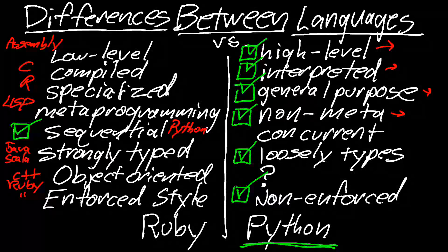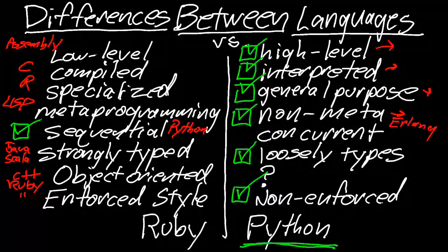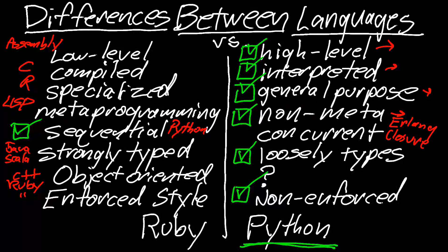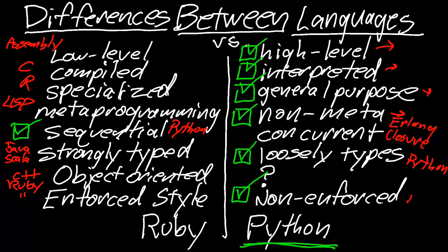General purpose again is almost everything. Non-meta is almost everything. Concurrent, well, that's an interesting one. There's a few languages out there that are specifically for concurrency. Erlang is one of them. I believe Closure is one of them. Loosely typed: Python. And non-enforced: Python.